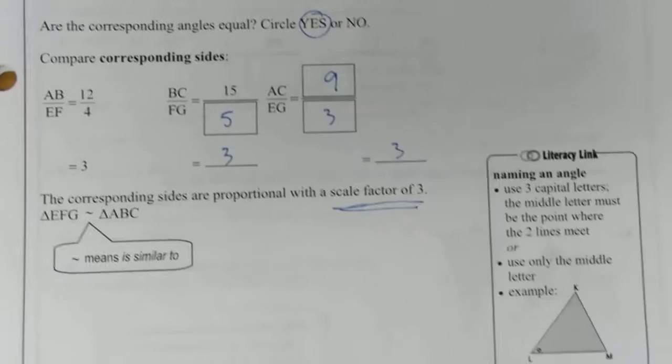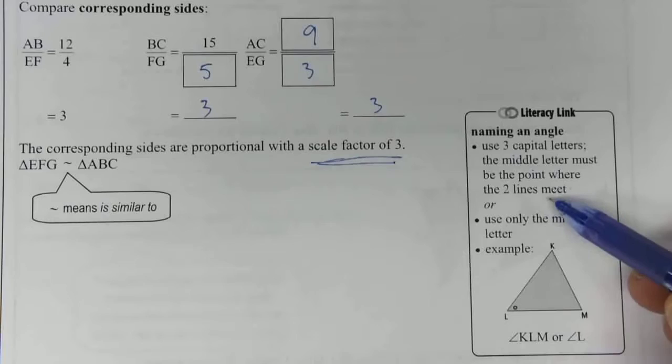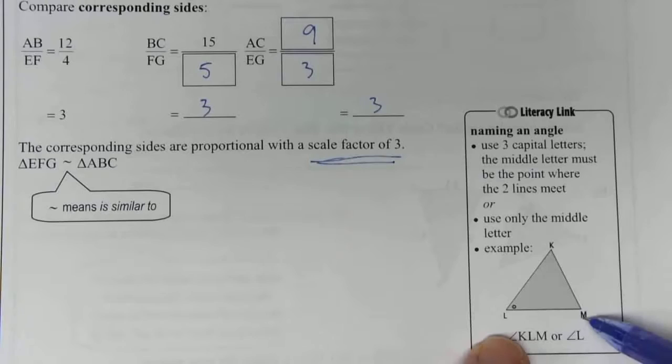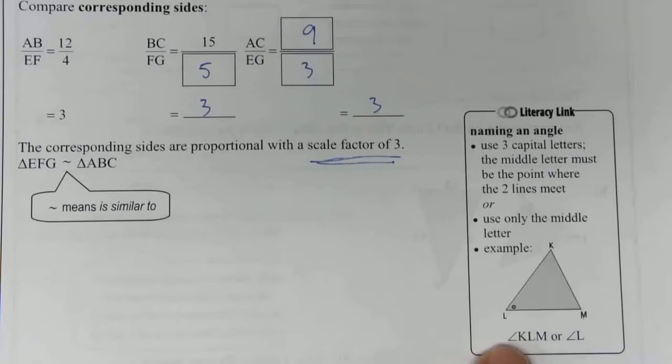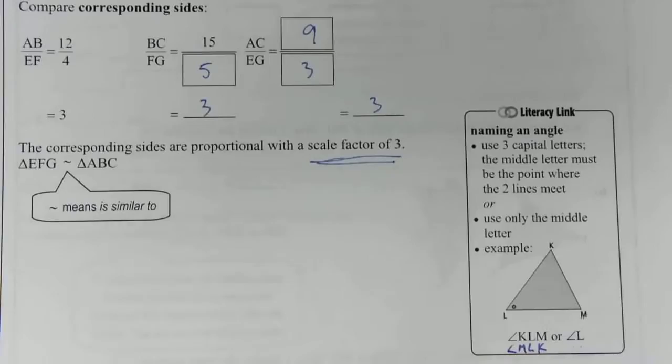And as another side note, when you're naming an angle, there's two ways to do it. You can use 3 capital letters, and the middle letter must be the point where your two lines meet. So if you're talking about this angle L, for instance, then you would reference it as angle KLM, or you could do angle MLK, but the L has to be in the middle if you're going to use three letters. The other approach is just to call it angle L, as shown here. So you can have KLM or MLK, or just use the single letter.